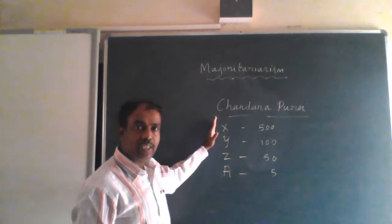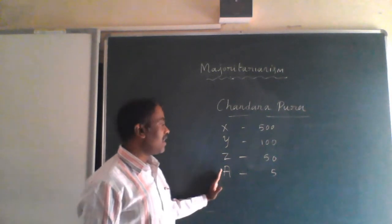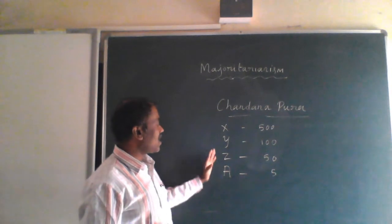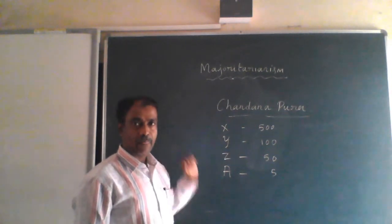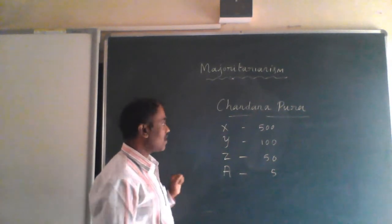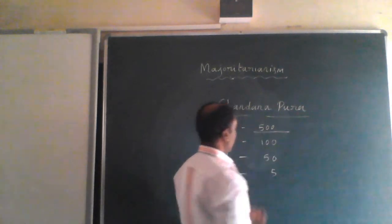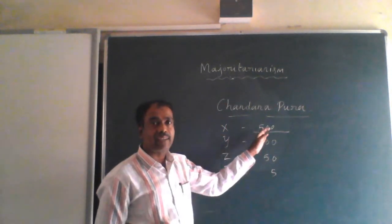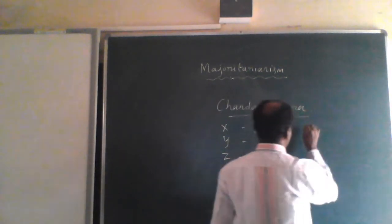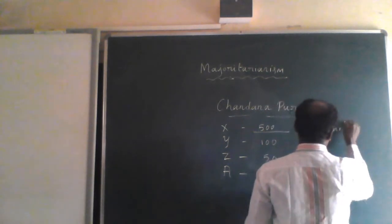In Chandanapura village, there are different communities living together. X is one community, Y is one community, Z is another community, and A is another community. You can imagine X, Y, Z, and A as different caste names, community names, or religions. Numerically, the 500 families — all of X — they are the majority one.